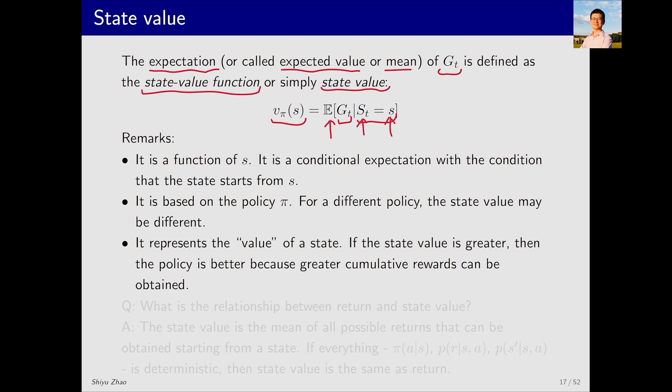There are several key points to note. First, v_π(s) is a function of state s, implying that different starting states s lead to different trajectories and naturally to different returns and then different state values.